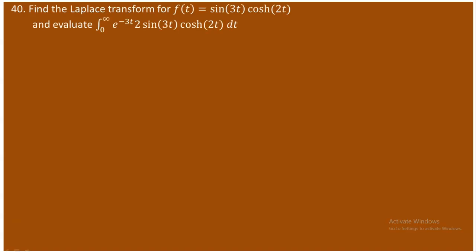Question 40 asks to find the Laplace transform for the function sine 3t times cosine hyperbolic of 2t, and also to evaluate an integral from the obtained Laplace transform. Let me show you how this can be done.